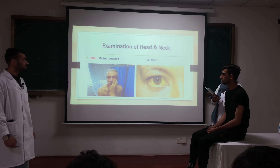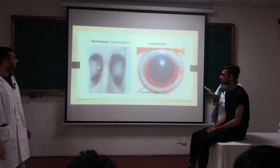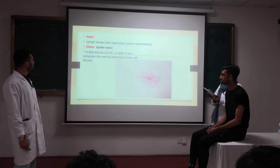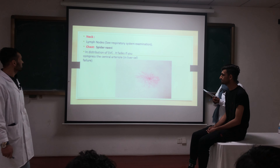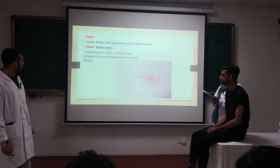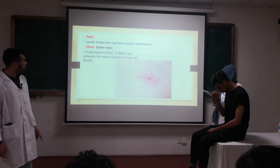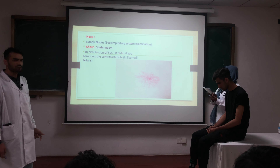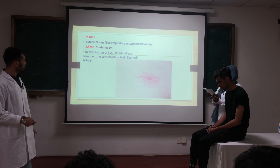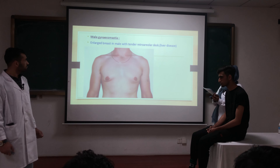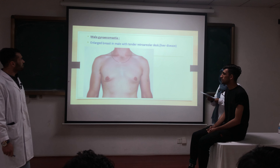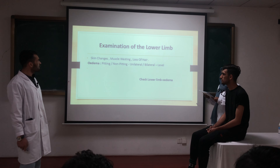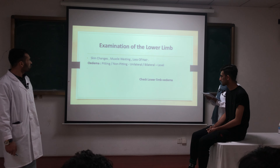Examine the hands and neck. Check the eyes for pallor in anemia and yellow discoloration for jaundice. Xanthelasma and corneal arcus are signs of hyperlipidemia. Palpate lymph nodes. Look for spider naevi which appear in disturbance of sex hormone metabolism in liver failure, and check for gynecomastia — enlargement of breast tissue in males — associated with chronic liver disease.